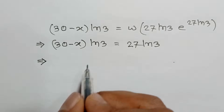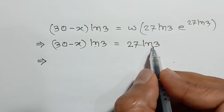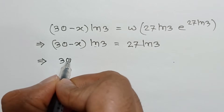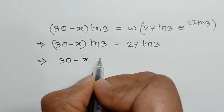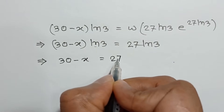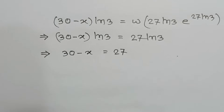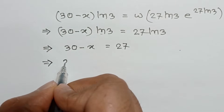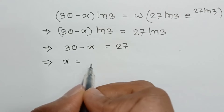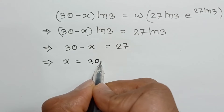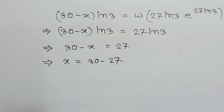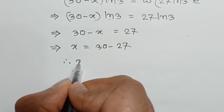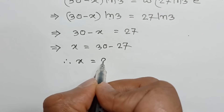So 30 minus x times ln of 3 is equal to 27 times ln of 3. The ln of 3 cancels from both sides, leaving 30 minus x is equal to 27. Or x is equal to 30 minus 27. So x is equal to 3.